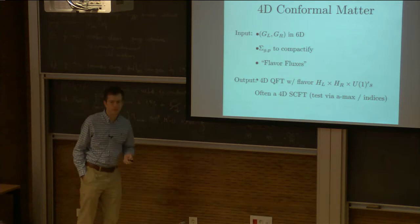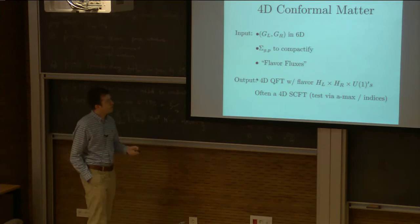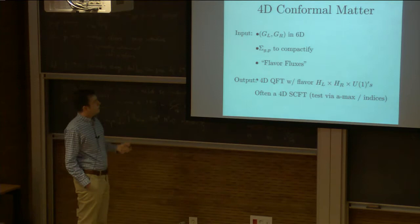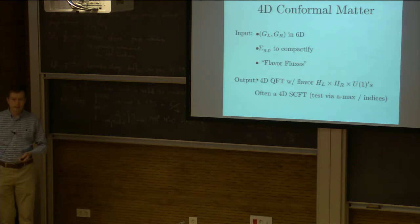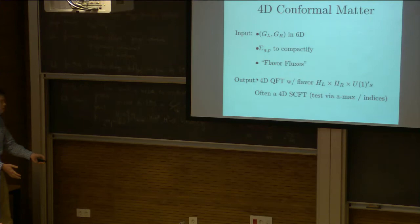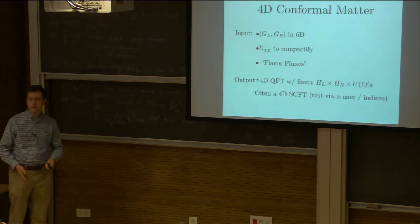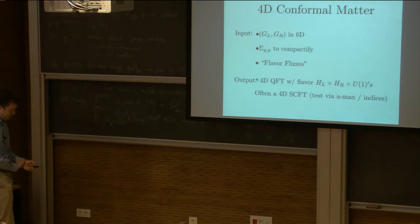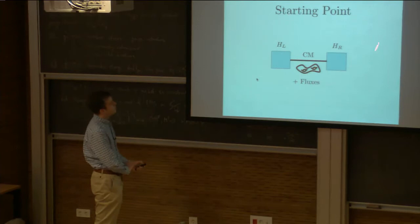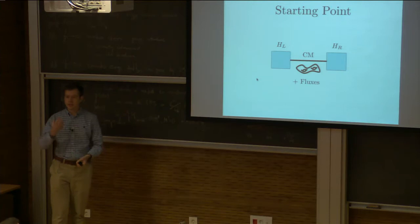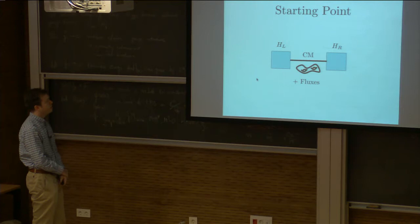To build matter fields for the four-dimensional theory, I take my six-dimensional conformal matter and compactify, switching on various flavor fluxes or fluxes from the seven-branes. When I switch on those fluxes I'll usually break some of the flavor symmetries, leaving a commutant subgroup — H_left inside G_left and H_right inside G_right — and maybe some U(1) fluxes. You can test that when you do this you often get a superconformal field theory in four dimensions. Tests involve A-maximization to find the infrared R-symmetry as a linear combination of the UV R-symmetry and whatever U(1)s are produced in these breaking patterns, and in some cases computing the superconformal index.